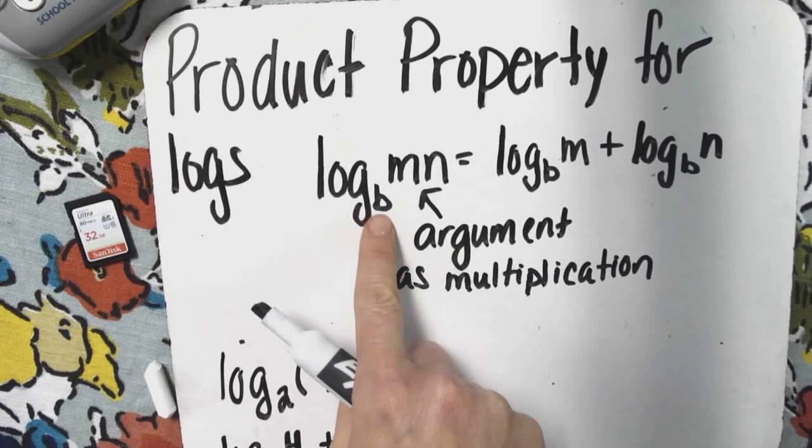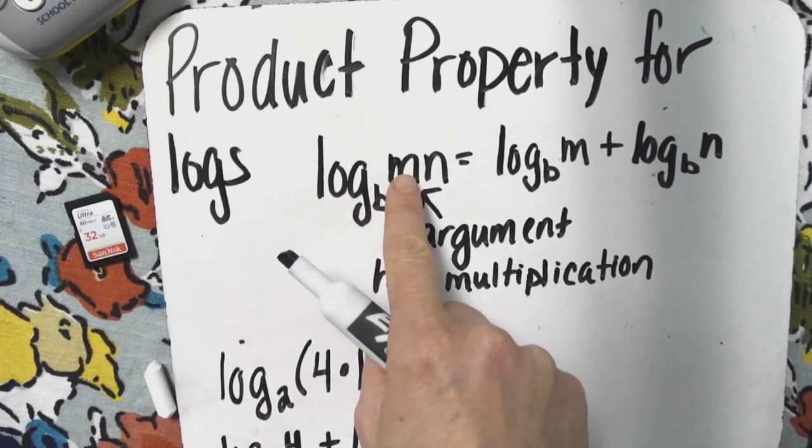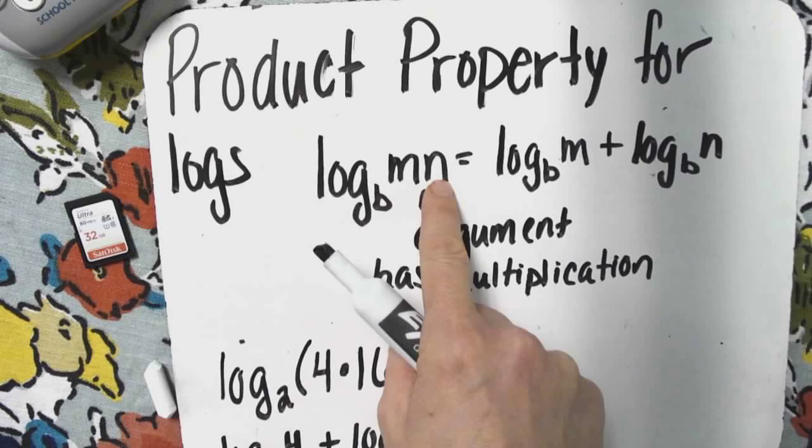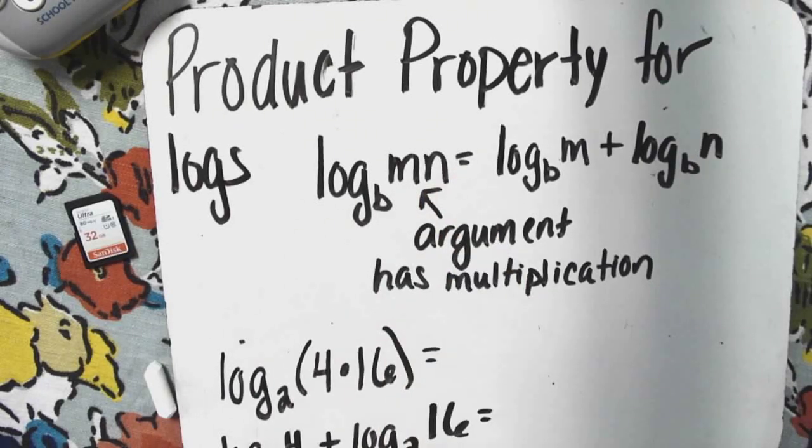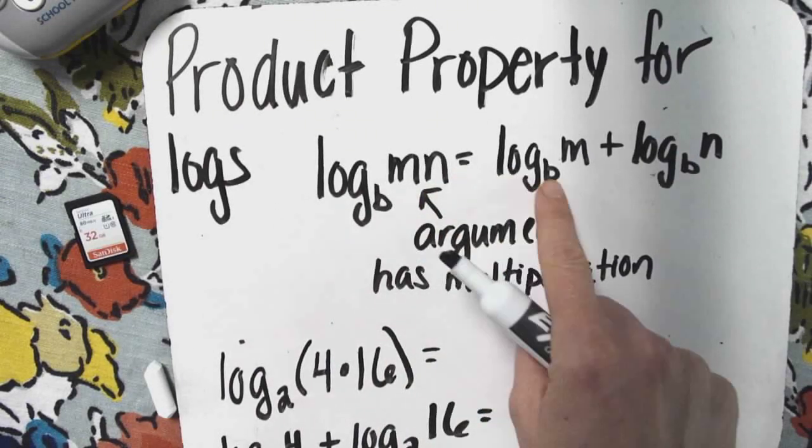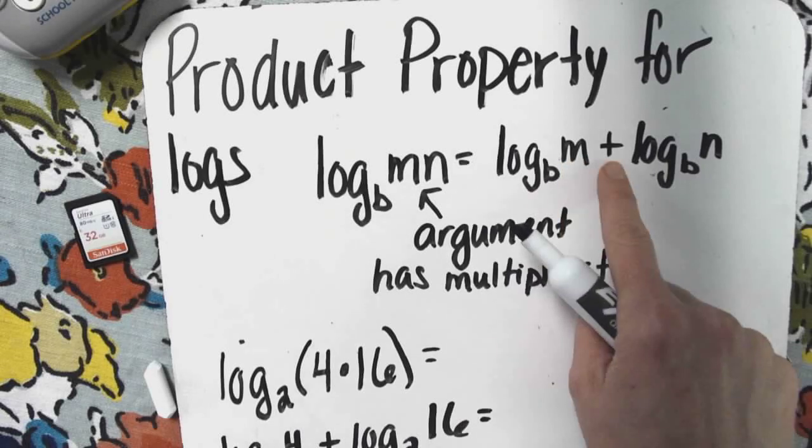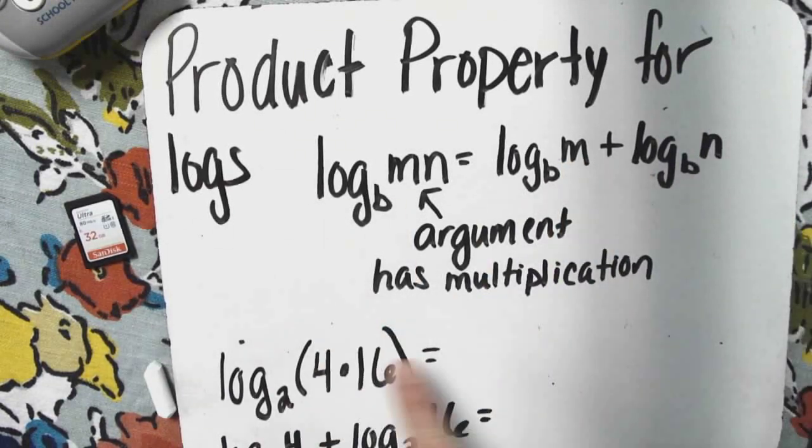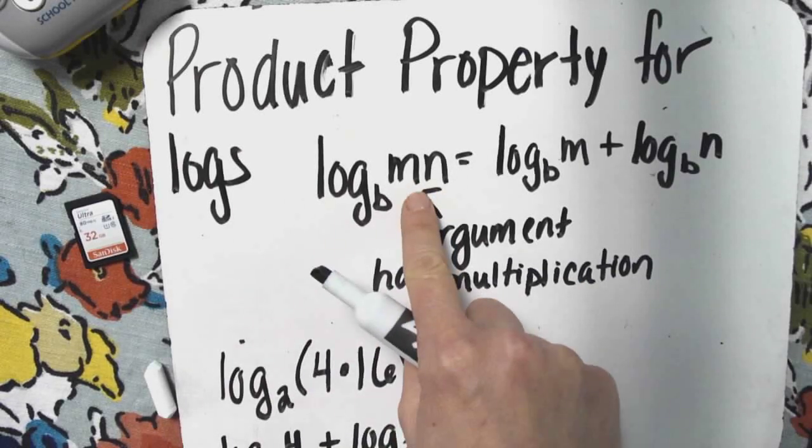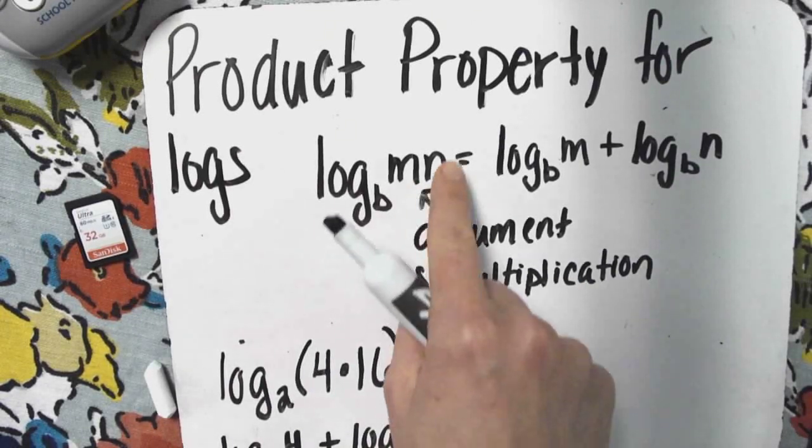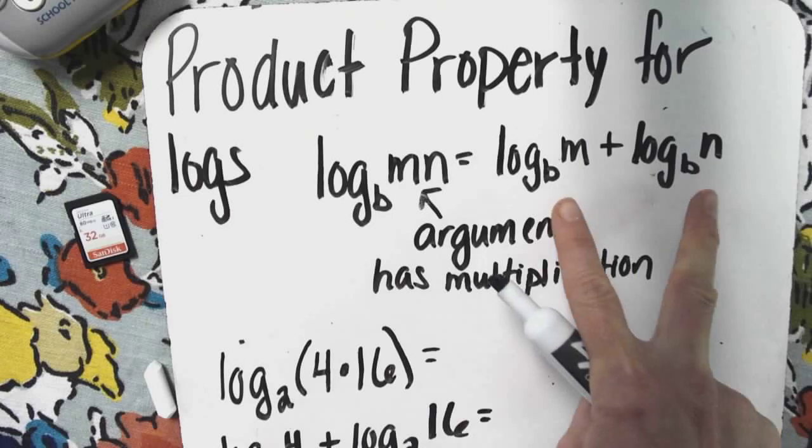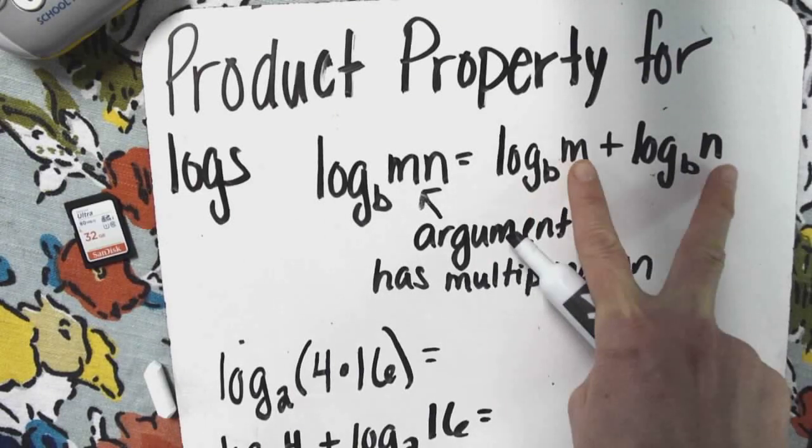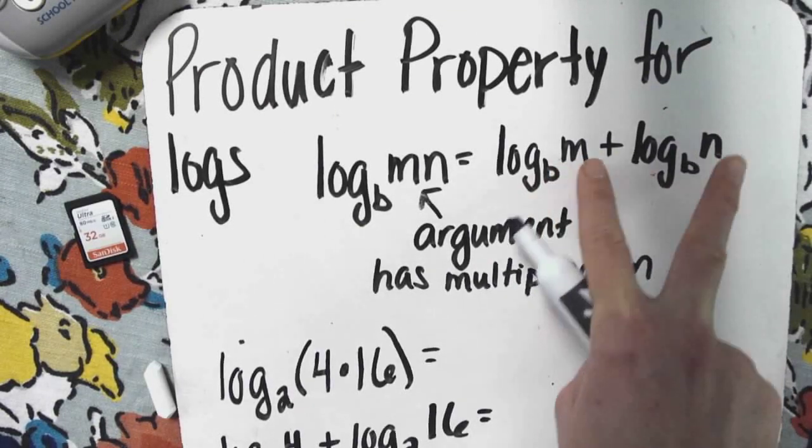Log of some base B of the argument m times n is equal to the log base B of m plus the log base B of n, meaning if the argument has multiplication you may take the single log and break it up into two and add between the two logs.